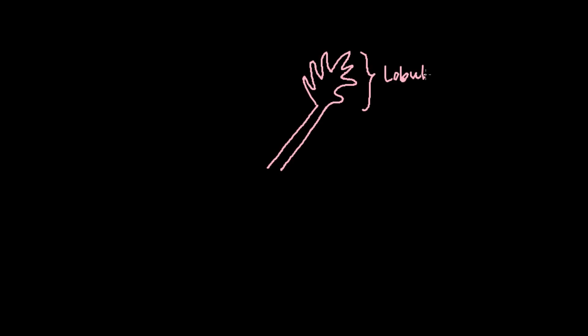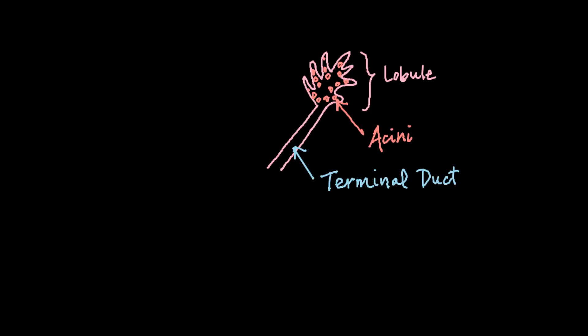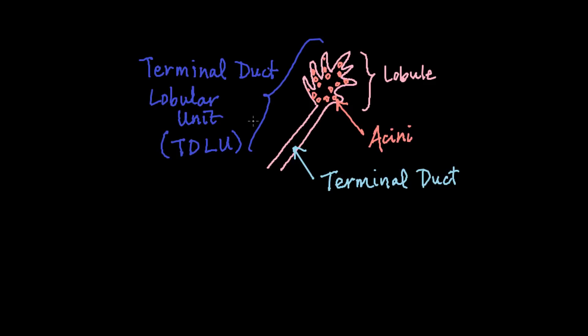Each lobe consists of lobules, which consist of alveoli or acini — sac-like structures where milk is synthesized and secreted. The lobules drain into a terminal duct. The lobules and the terminal duct into which they drain is known as the terminal duct lobular unit, or TDLU. Remember this term as it will come up again later.